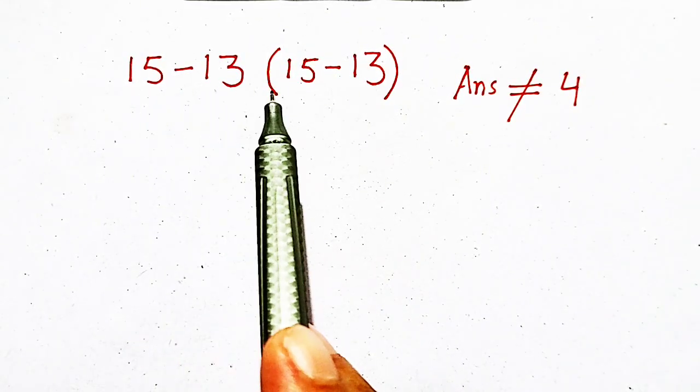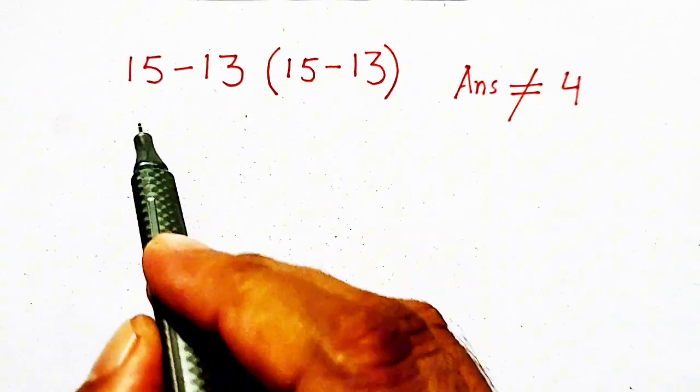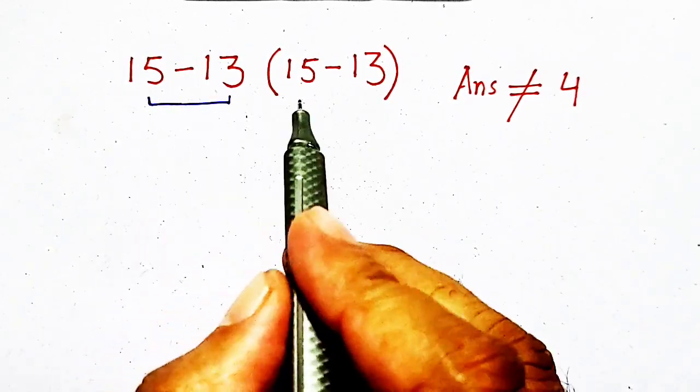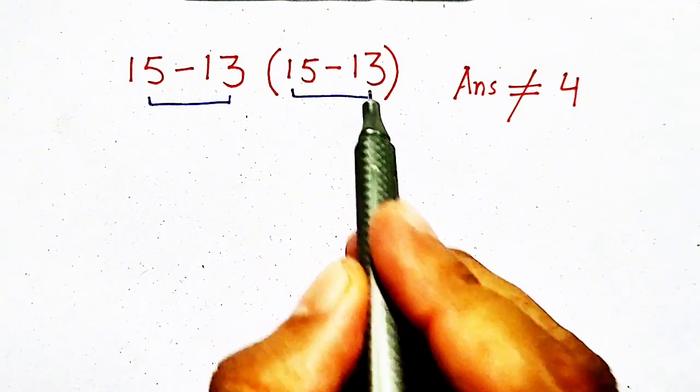15 minus 13 times 15 minus 13. It's very simple. 15 minus 13, and it is also 15 minus 13.